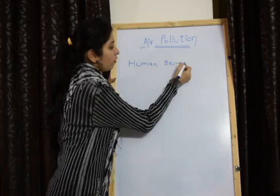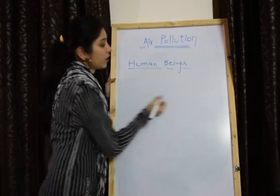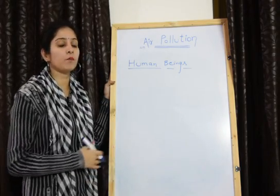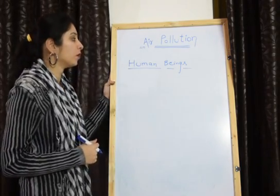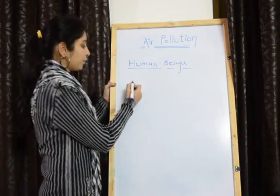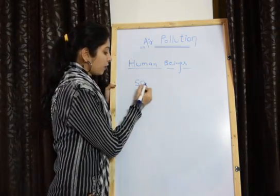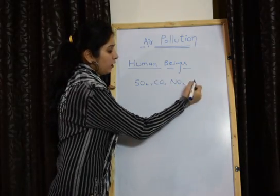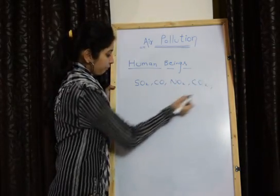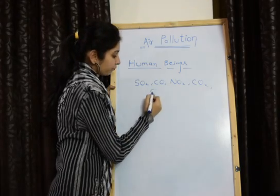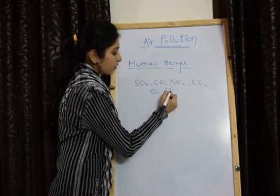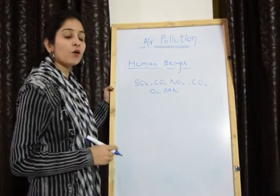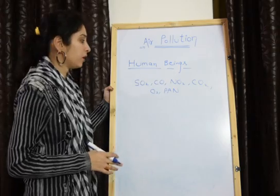Whenever we talk about the air pollutants, in the previous class we discussed that air pollutants can be divided into two types: primary air pollutants as well as secondary air pollutants. Some main air pollutants are sulfur dioxide, carbon monoxide, nitrogen dioxide, carbon dioxide, ozone, and peroxyacetyl nitrate. All these are some air pollutants which can cause harmful effects on human beings.